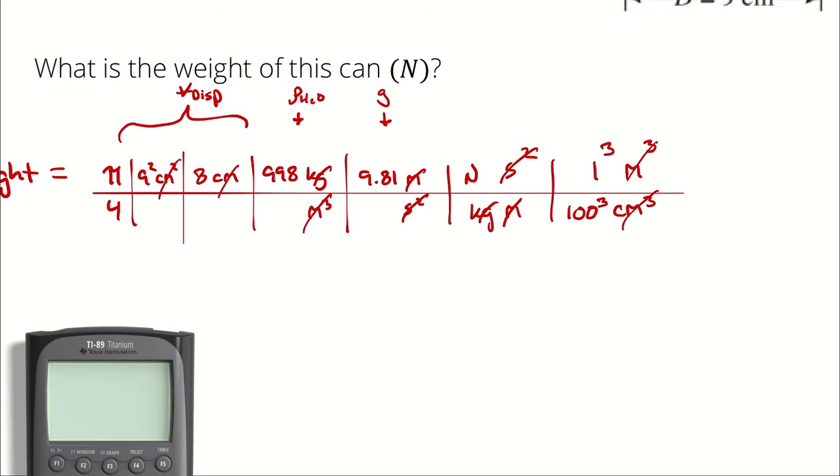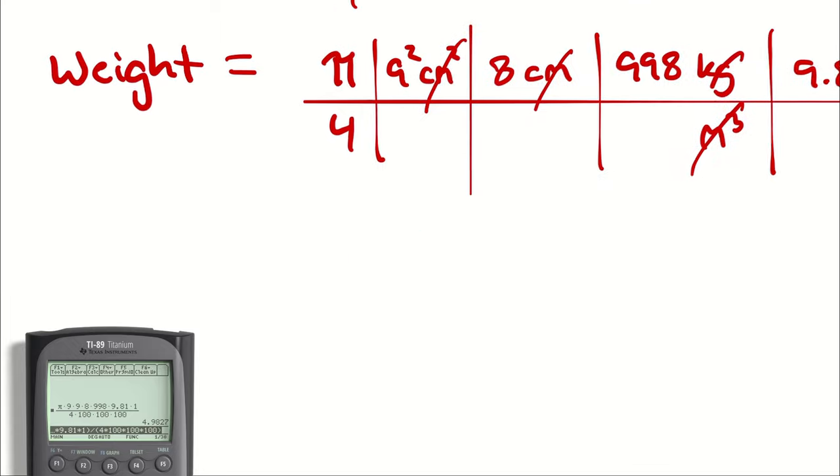So calculator, if you would help us out. That is pi over 4. 9 squared. I'm going to write that as 9 times 9. And then I'm multiplying by 998 times 9.81 times 1 cubed, which is 1. Then we are dividing by 4 times 100 cubed. And I get 4.98 newtons.